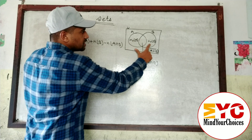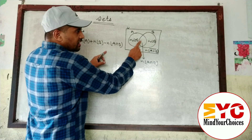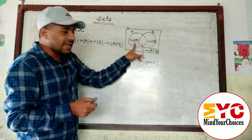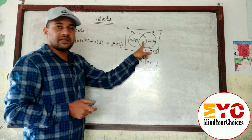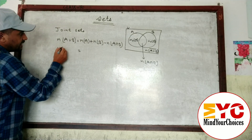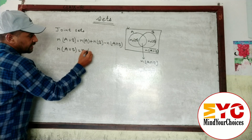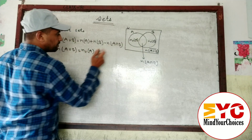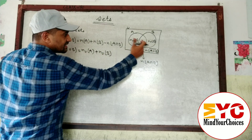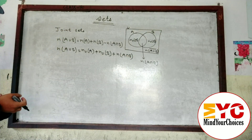A∪B means this part plus this part plus this part. n(A) is here, then n(B) is here. When you take n(A), this middle part — the intersection — is included, and when you take n(B), it is repeated. So we have to subtract it once. Another formula for n(A∪B) is: n(only A) plus n(only B) plus n(A∩B).